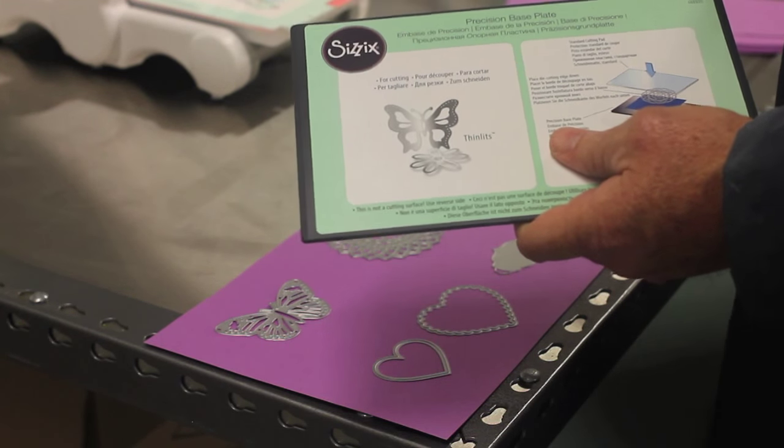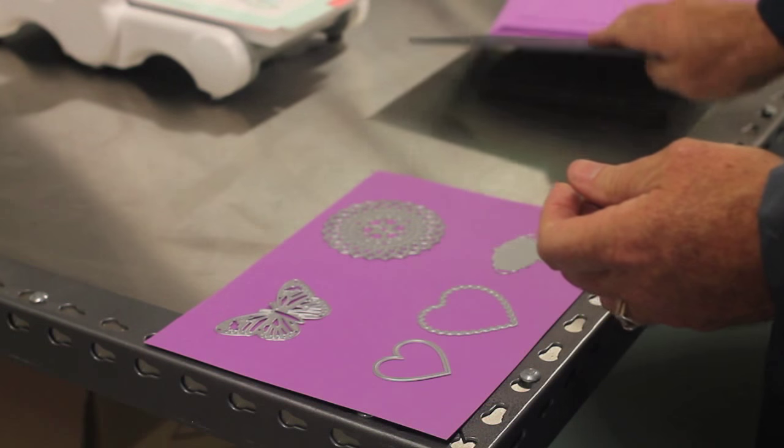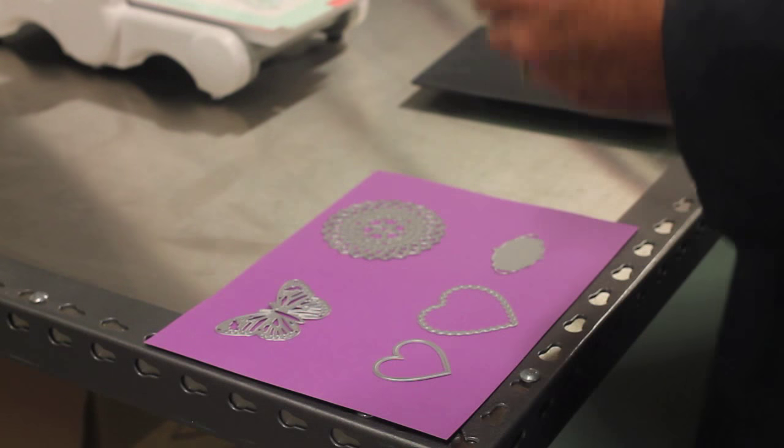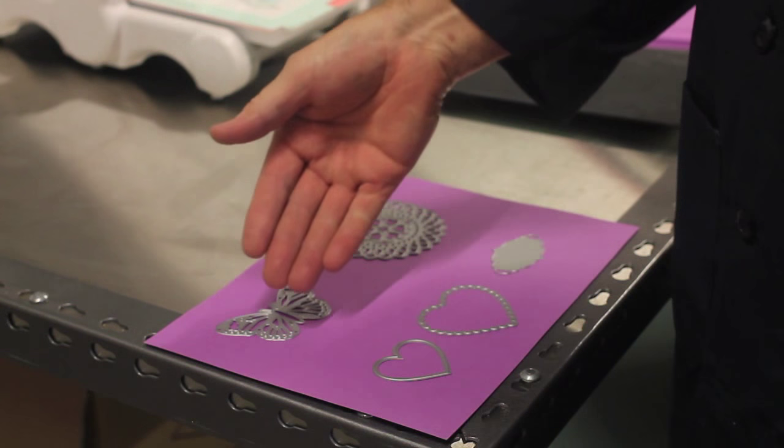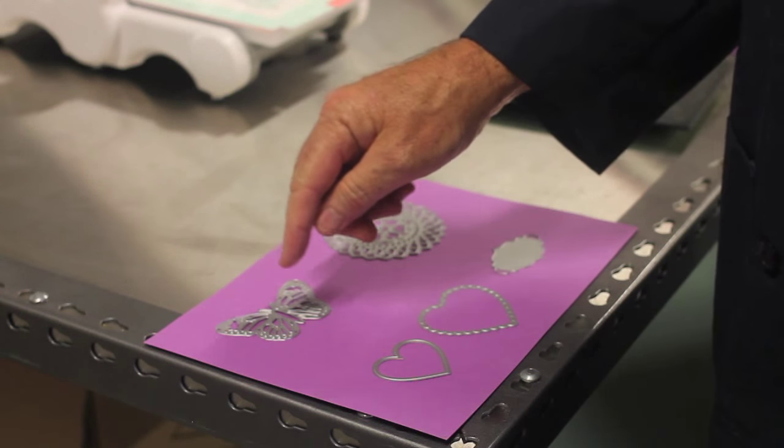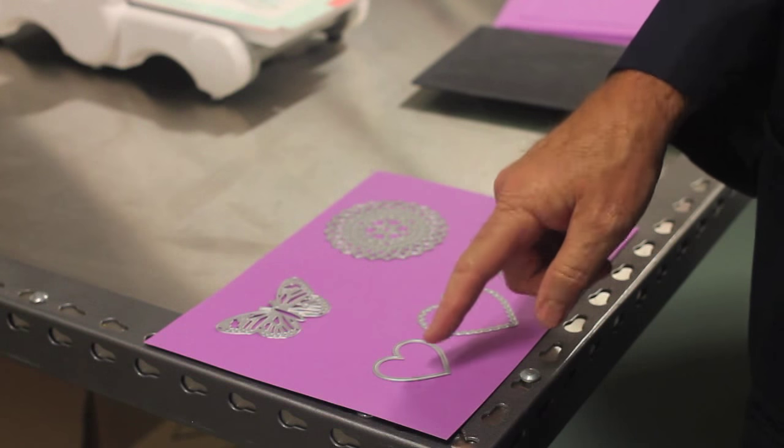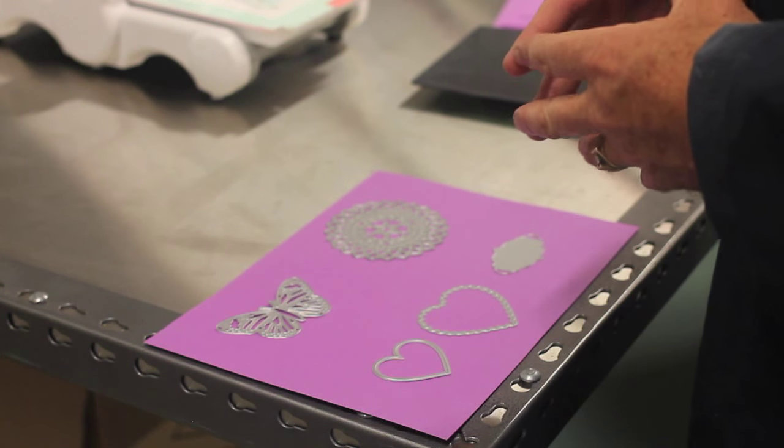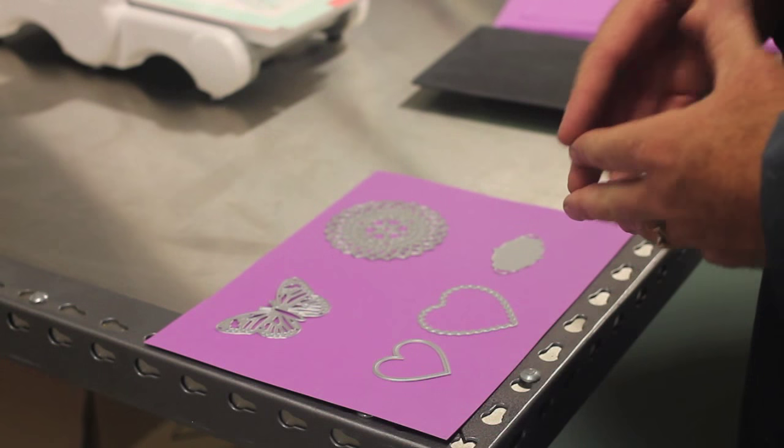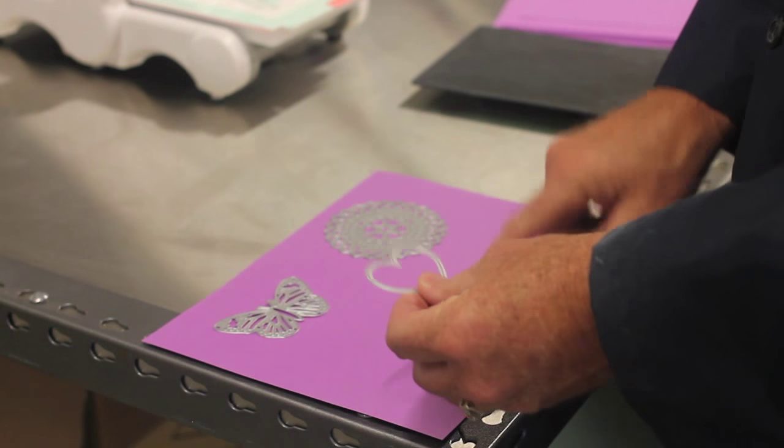It is recommended to use the Precision Base Plate with chemical etched dies, such as our Thinlits. Right here, this top row shows you very detailed, very intricate shapes that are within a design. You can see that here, and below that is not recommended. Even though they're chemical etched dies, they're Framelits, but because it's so simple, we do not use these.